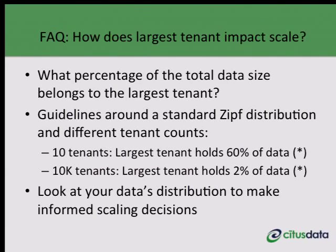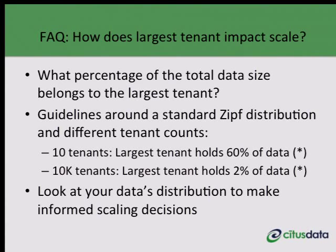If there are any questions — so have you addressed the problem where you have a single tenant that overflows your biggest machine? Typically, people who use Citus have 10,000 to 100,000 tenants, and in PostgreSQL the largest tenant is about 1% of the data, so they have room to grow. For the largest tenant, Citus has a function that isolates it to particular hardware. So far, for large tenant counts, we haven't had customers whose largest tenant outgrew a single machine, but we have worked in that area.